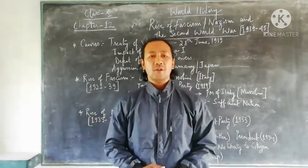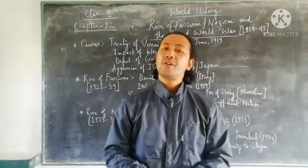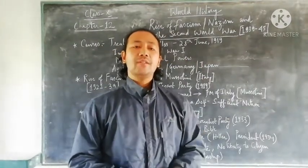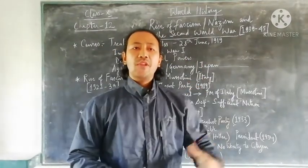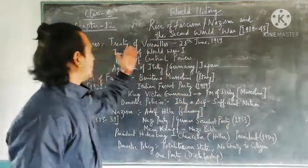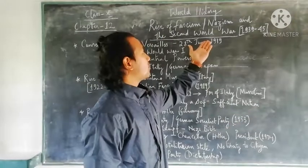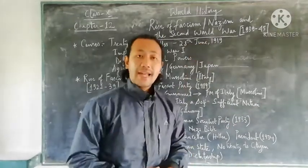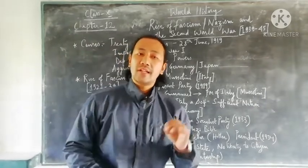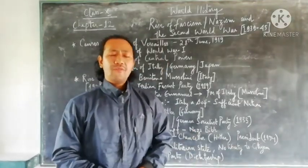Hello students, once again I welcome you all to your history online class. In today's online class we will be moving towards world history with chapter number 12, that is the rise of fascism, with a new topic known as Nazism and the Second World War, from the year 1939 till 1945.